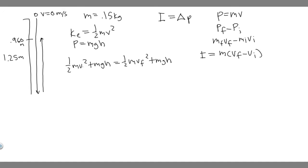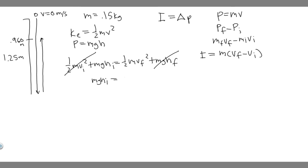Two terms cancel out. The initial speed is zero because the ball starts from rest, so the kinetic energy term cancels. And h_final is zero because it's at the ground level, so the potential energy at the bottom cancels too. That leaves mgh_initial equals one-half mv_final squared.